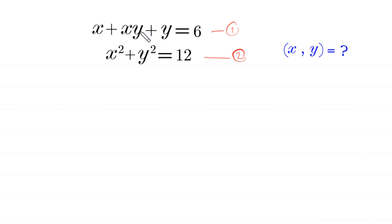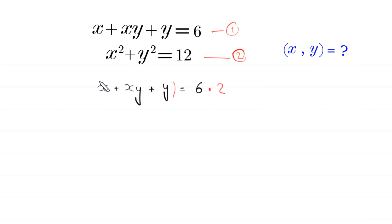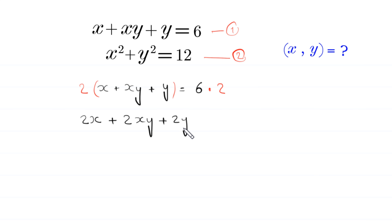We multiply equation 1 by 2. Equation 1 is x plus xy plus y equals 6. Multiplying both sides by 2 gives: 2x plus 2xy plus 2y equals 12. Let's call this equation 3.